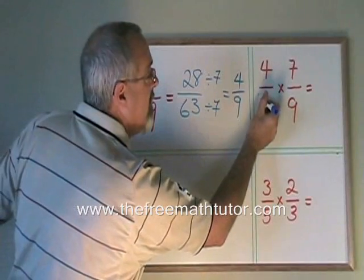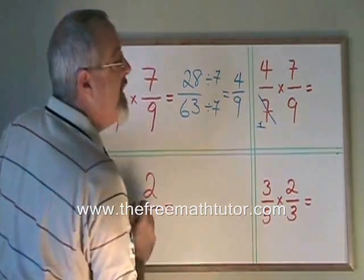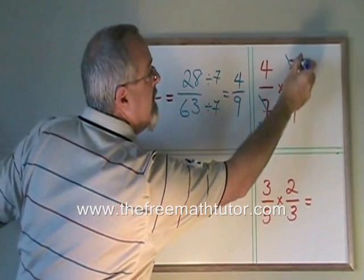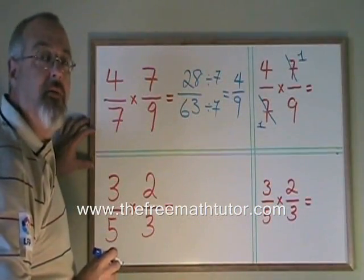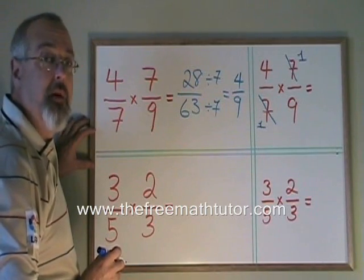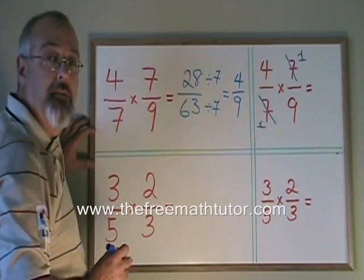We're dividing the bottom by 7 and that gives us a 1. And we're dividing the top by a 7 and that gives us a 1. When we do this, we put a line through the number we are canceling so that we can remember we don't have that number there anymore. The 7s have been replaced by 1s.